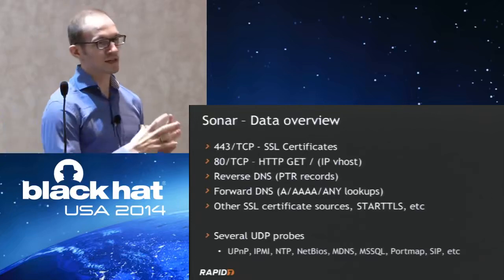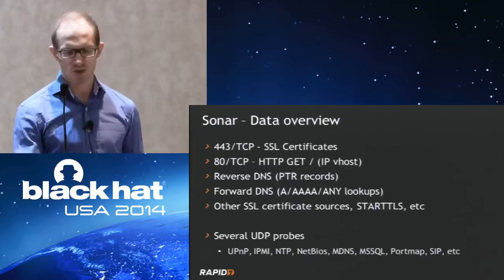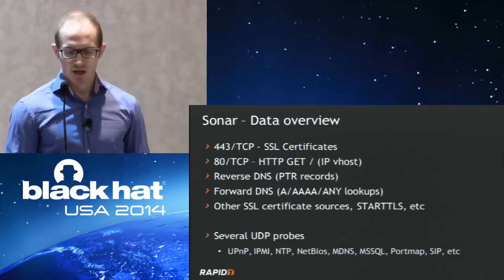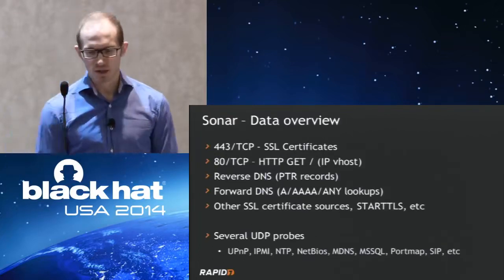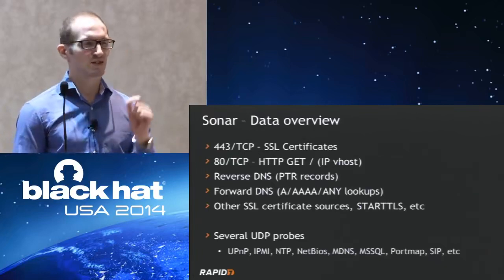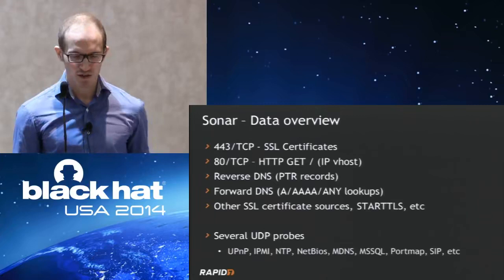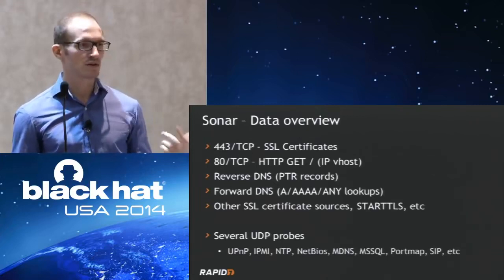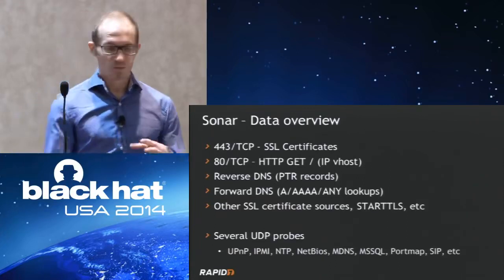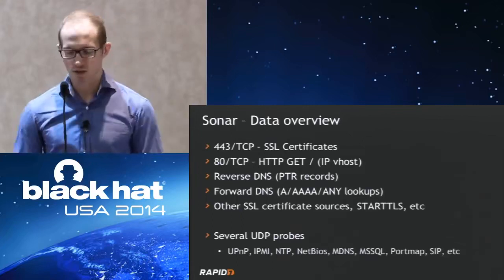We do forward DNS lookups as well. We compile a huge name list and ask what the IP address is behind each name — we actually do ANY lookups, getting several record types back. We have millions and millions of these records; it's all published of course. We also look at other SSL certificate sources beyond web servers — mail servers, IMAP and SMTP and so on. We're adding more things along the way, and this stuff is used for internal research but also published so that anyone here can hopefully use it for their own research.